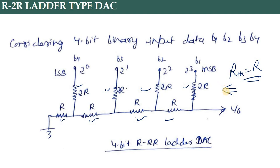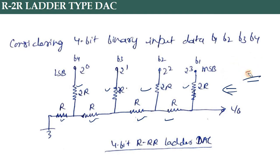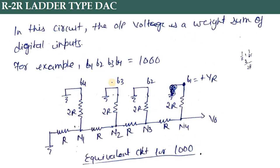The Thevenin equivalent resistance of the R2R ladder is always R — you can remember this for competitive exams and university examinations. For a 4-bit example, on the LSB side we have 2 raised to the power 0, then 2 raised to the power 1, 2 raised to the power 2, and 2 raised to the power 3 on the MSB side. The output is taken here, and the inputs are either 0 (grounded) or 1 (connected to Vr).